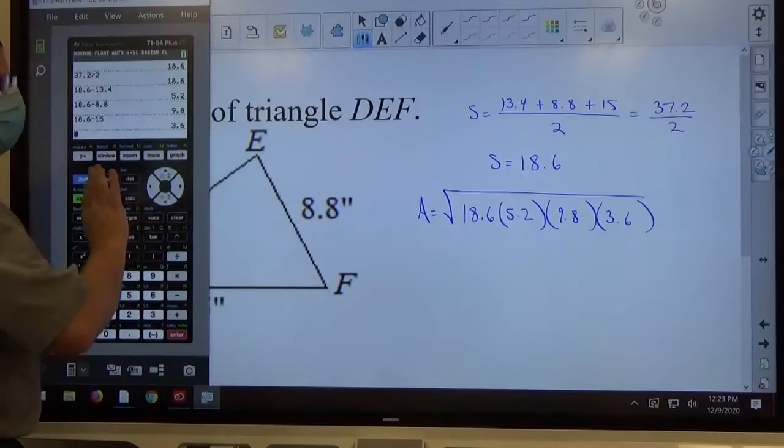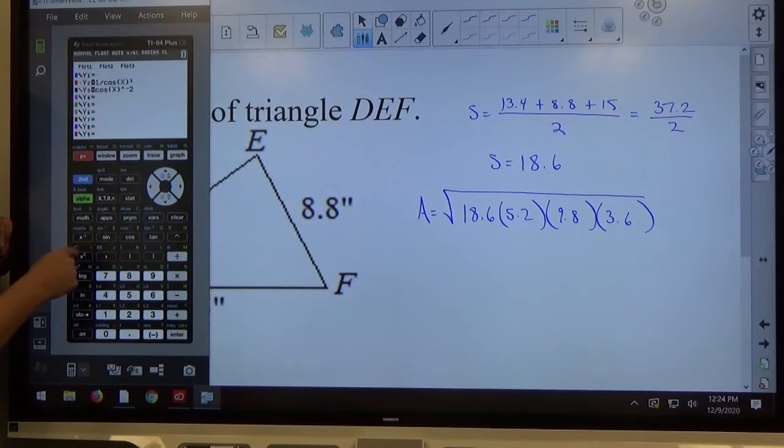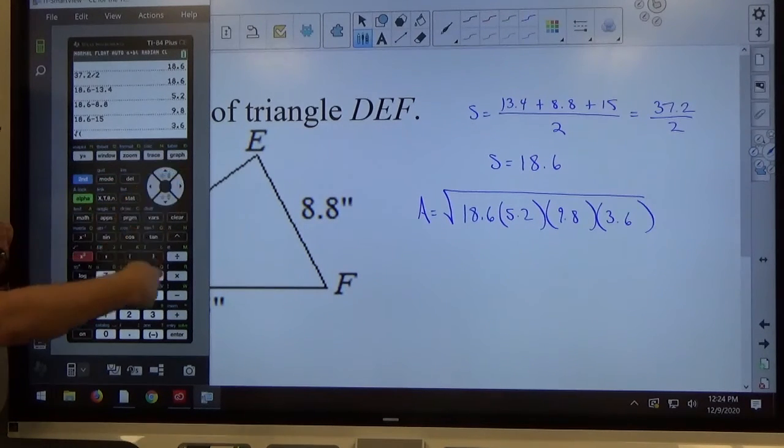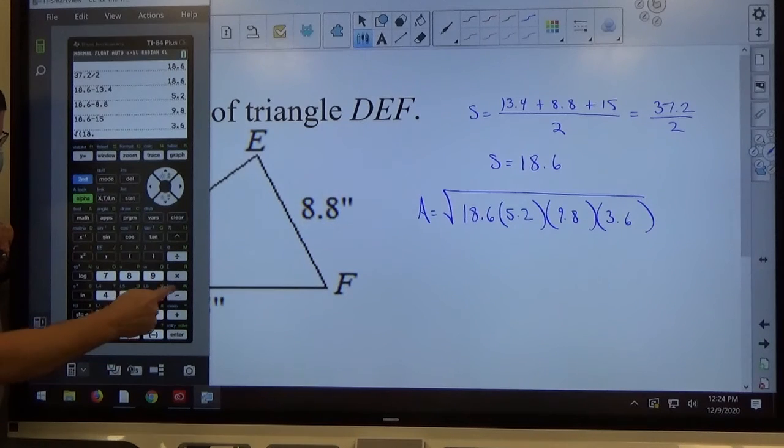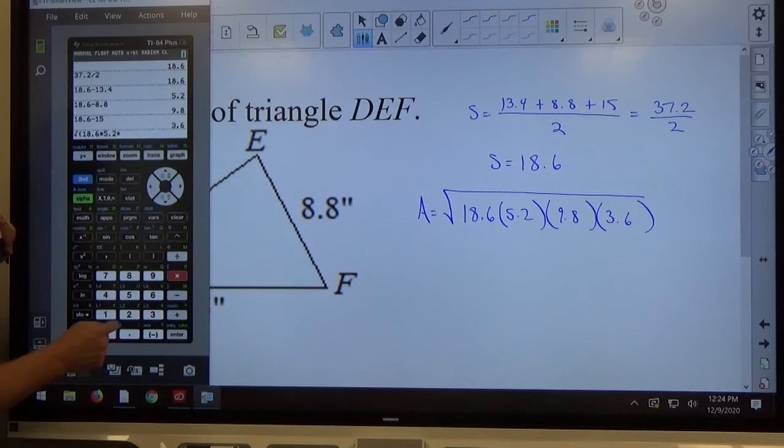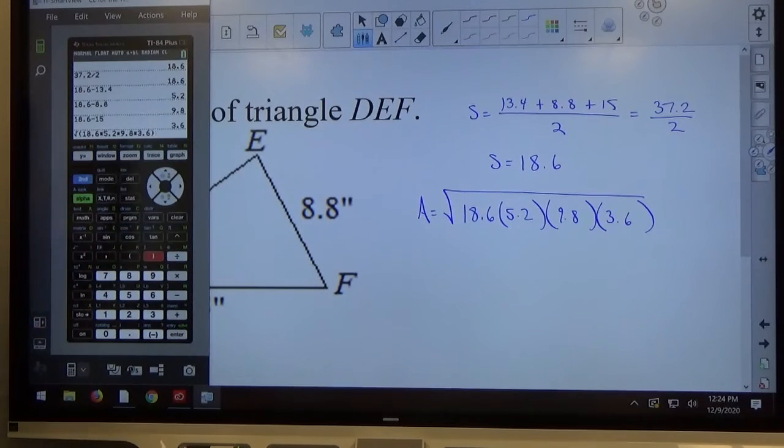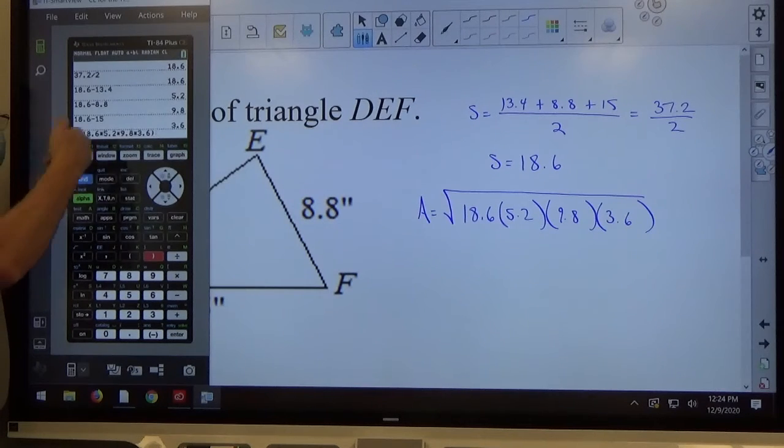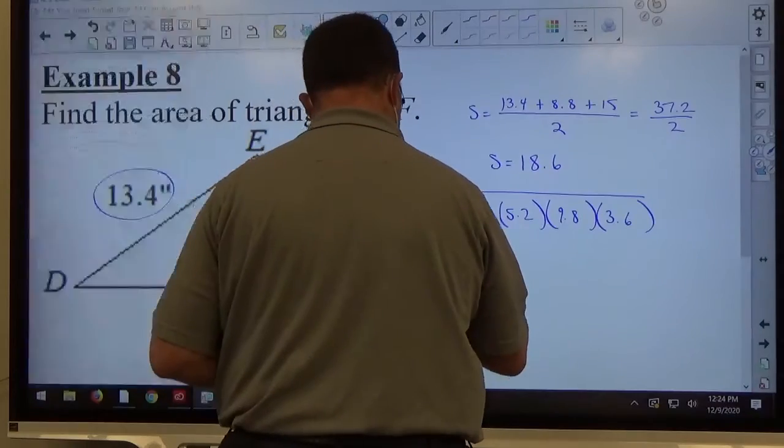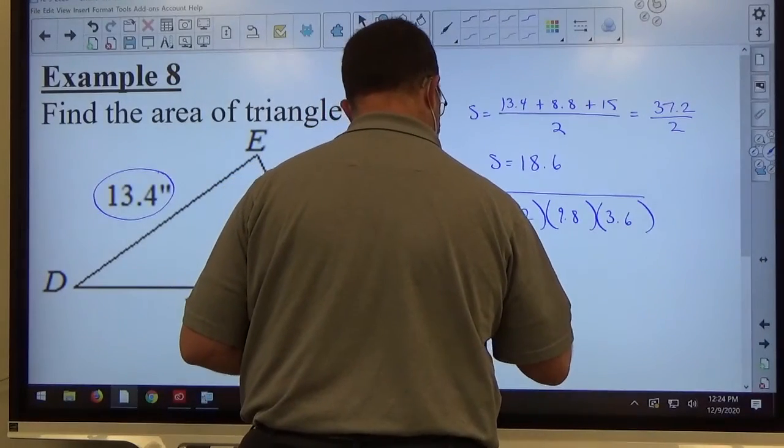And don't use parentheses in this step. So square root, when you hit the square root, it automatically puts that beginning parentheses. Just type the numbers with a multiplication in between. So 18.6 multiplied by 5.2 multiplied by 9.8 multiplied by 3.6. Then put an end parentheses. Don't put like parentheses, parentheses, then you get so confused about what's underneath the radical. So square root, parentheses, type the whole thing in, end parentheses, use multiplication symbols, no parentheses in between, hit equals, and you get 58.41 square inches.